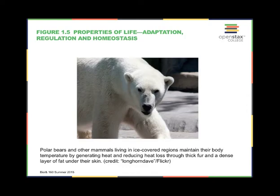Adaptation: in any one population, individuals with characteristics that lead to greater survival and reproduction will tend to produce more offspring than other individuals who have less useful characteristics. Over time, those beneficial characteristics will become more and more common in the population, and the less beneficial characteristics will become less and less common. This increase in the frequency of beneficial characteristics is called adaptation. White fur, for example, has come to be the dominant color in polar bears. In the future, as polar bears struggle to survive in less and less icy conditions, we may see a darkening of their fur, at least during the winter parts of the year.